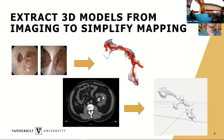Assessing where surgeons are looking doesn't by itself help them do their job better. What we're trying to explore is whether we can create better models of the scene that are easier to understand. We can segment a CT image to get a 3D model of the kidney structure, including the vasculature inside — not perfect segmentation, but showing surgeons the model may help them visualize where they are in the kidney.